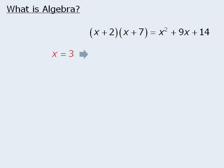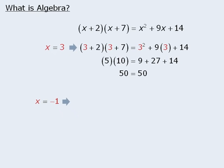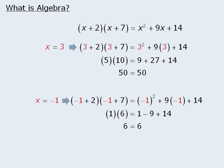For example, when x equals 3, the evaluation of x plus 2 times x plus 7 must equal the evaluation of x squared plus 9x plus 14. In this case, both expressions evaluate to be 50 when x equals 3. Similarly, if we let x equal negative 1, both expressions evaluate to be 6. And in general, both expressions will have the same evaluation for every possible value of x.